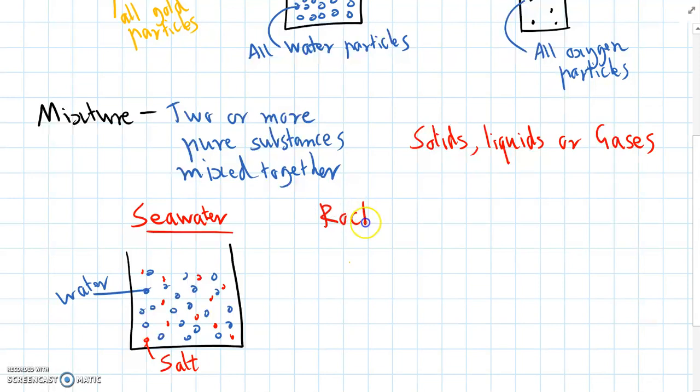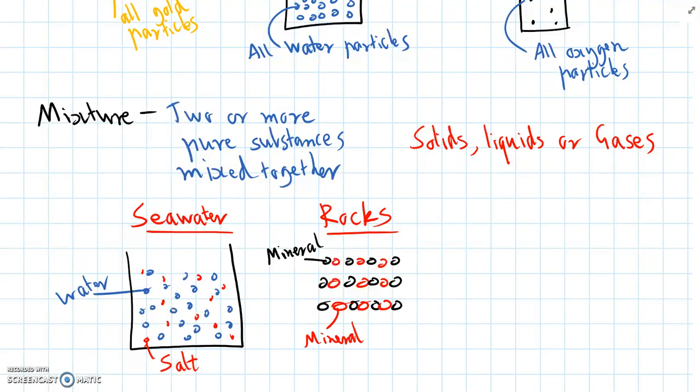Another mixture is rocks, because rocks are actually made of different types of minerals mixed together. There will be one type of mineral mixed together with another type of mineral, and there might even be a third and a fourth different type of mineral mixed in. But because rocks are solid, all these minerals are tightly packed together.